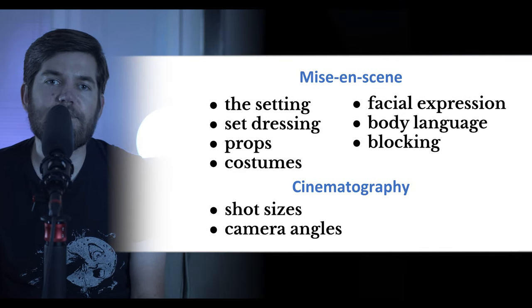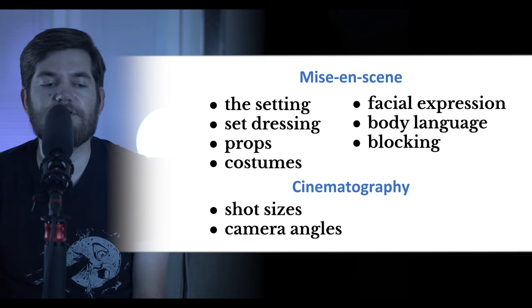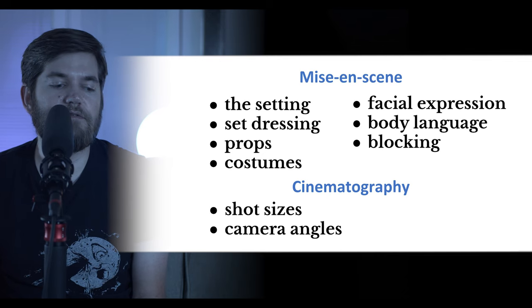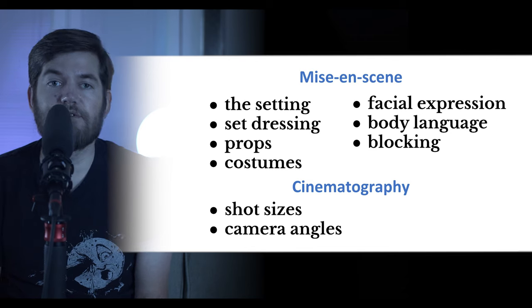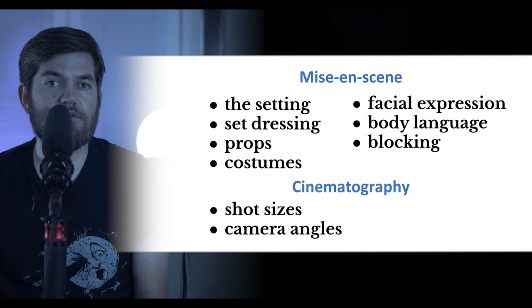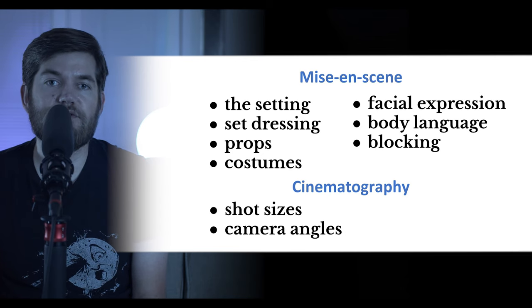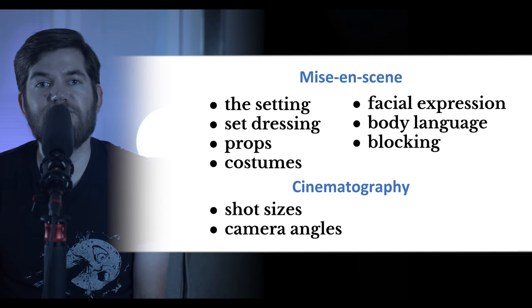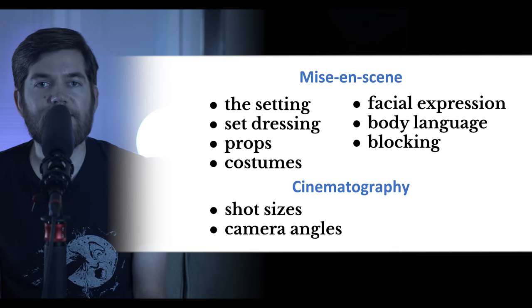To summarize our vocab: for mise-en-scène, we have setting, set dressing, props, costume, body language, facial expression, and blocking. For cinematography, we have the various shot sizes — determined by distance (close or long) — and camera angles, referred to by the position of the camera (high or low). Now let's analyze some images using this vocabulary.